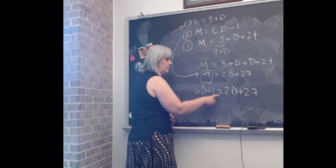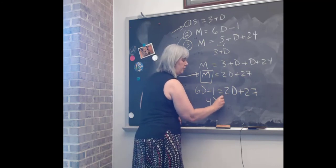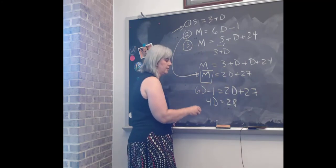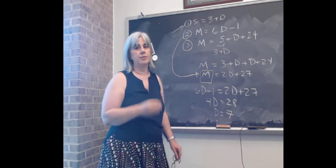When I combine like terms, subtract 2D from both sides, add one to both sides, I get that 4D = 28, or D must be equal to 7.